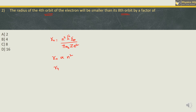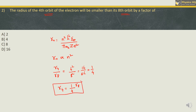When we take the ratio r₄ to r₈, we get 4² divided by 8², which is 16 divided by 64, giving us 1 by 4. So we can write r₄ = (1/4) r₈. The radius of the fourth orbit of the electron will be smaller than the eighth orbit by a factor of 4. So the correct option is option B.